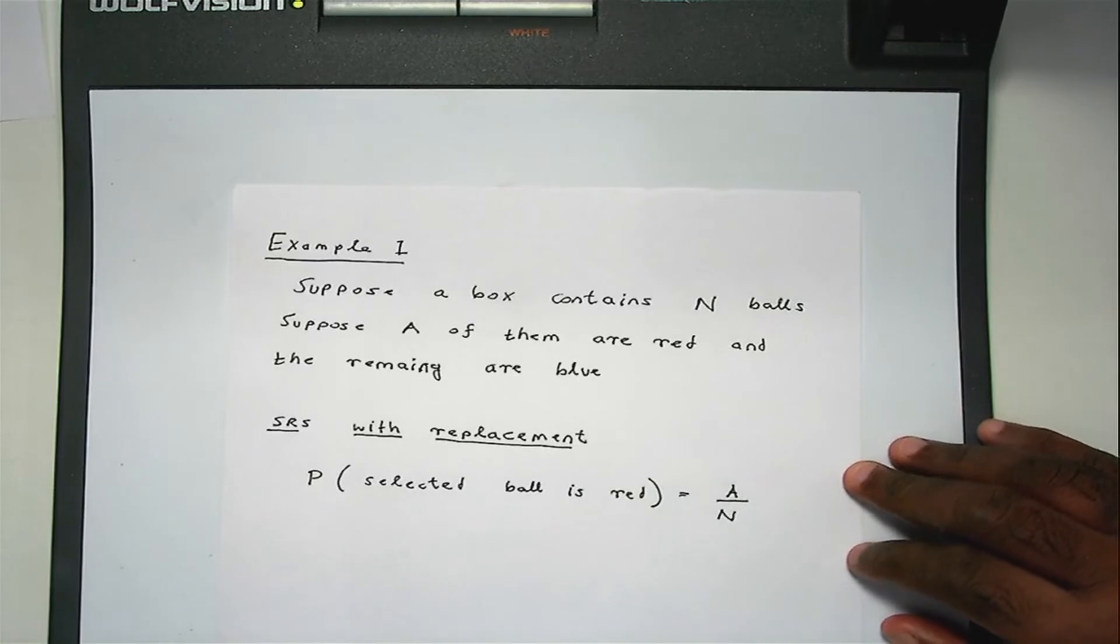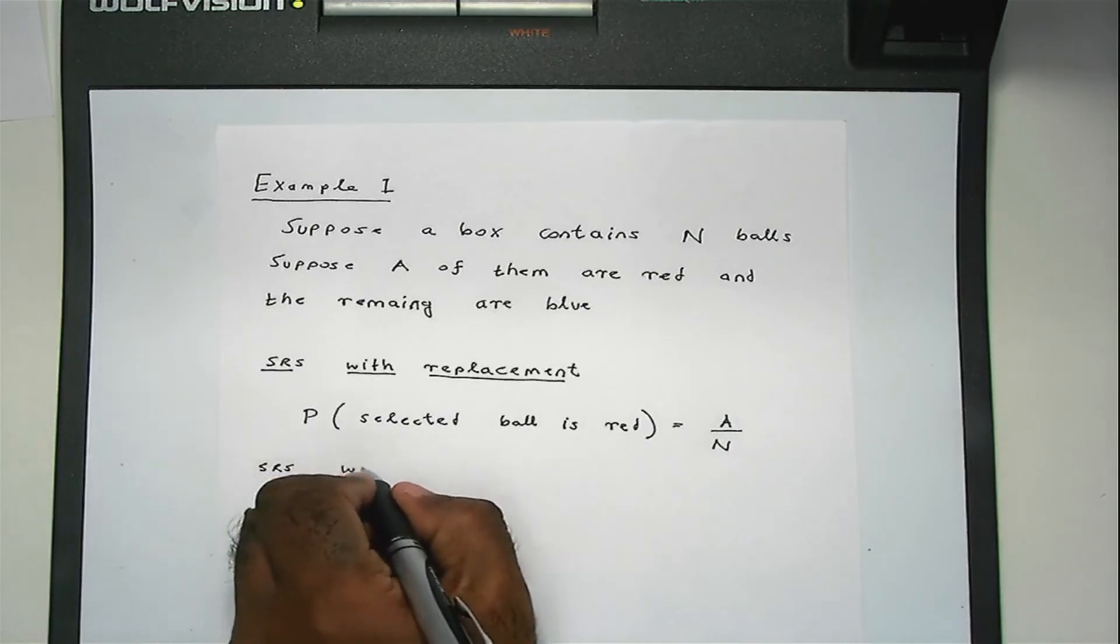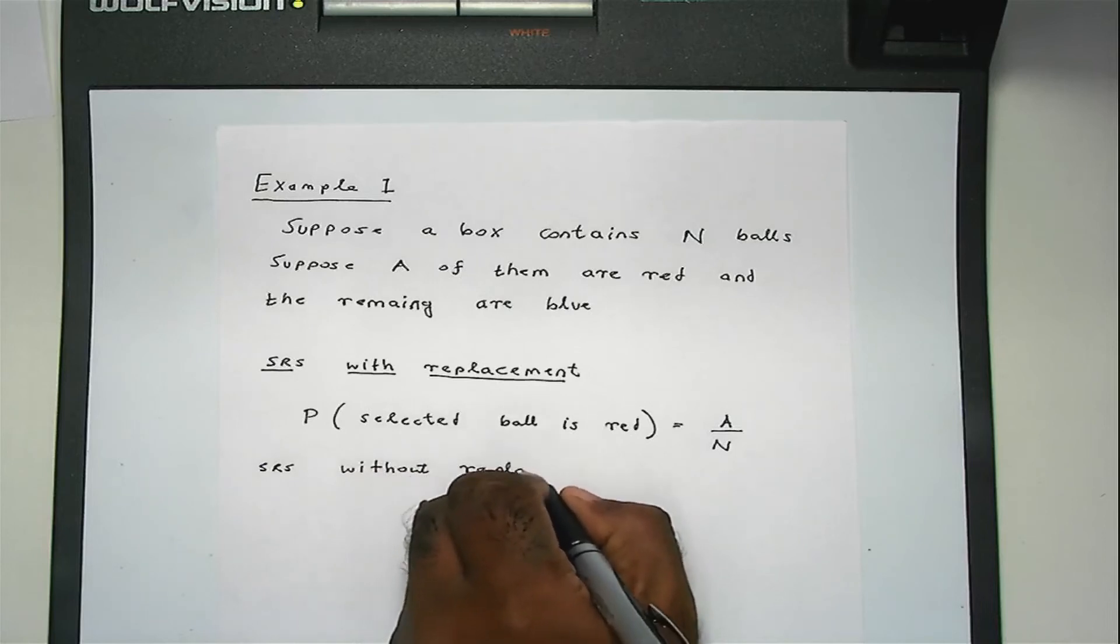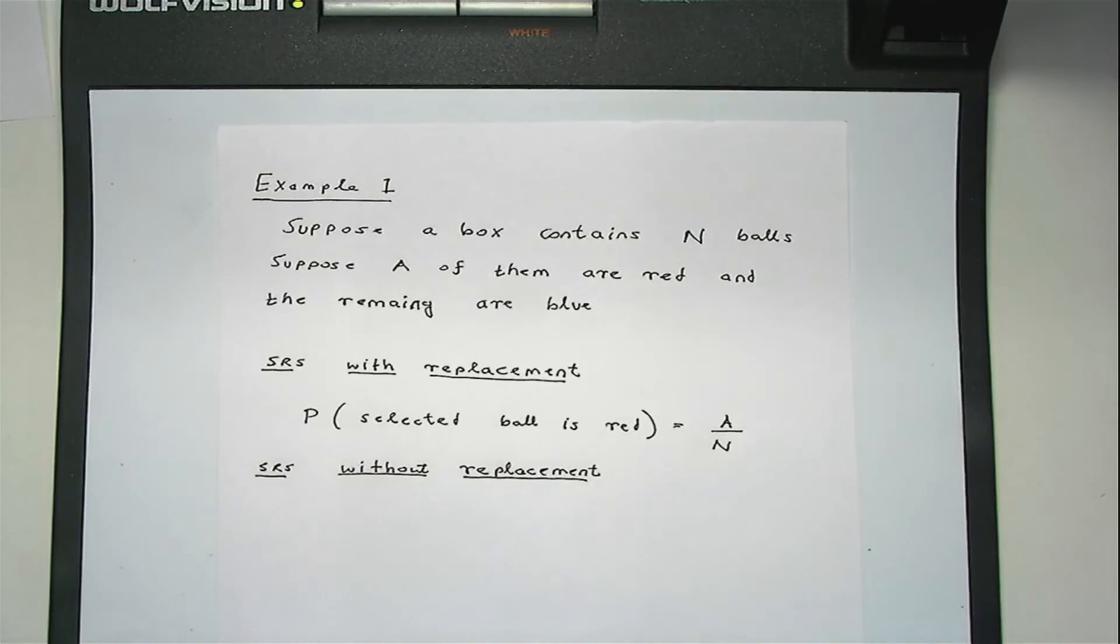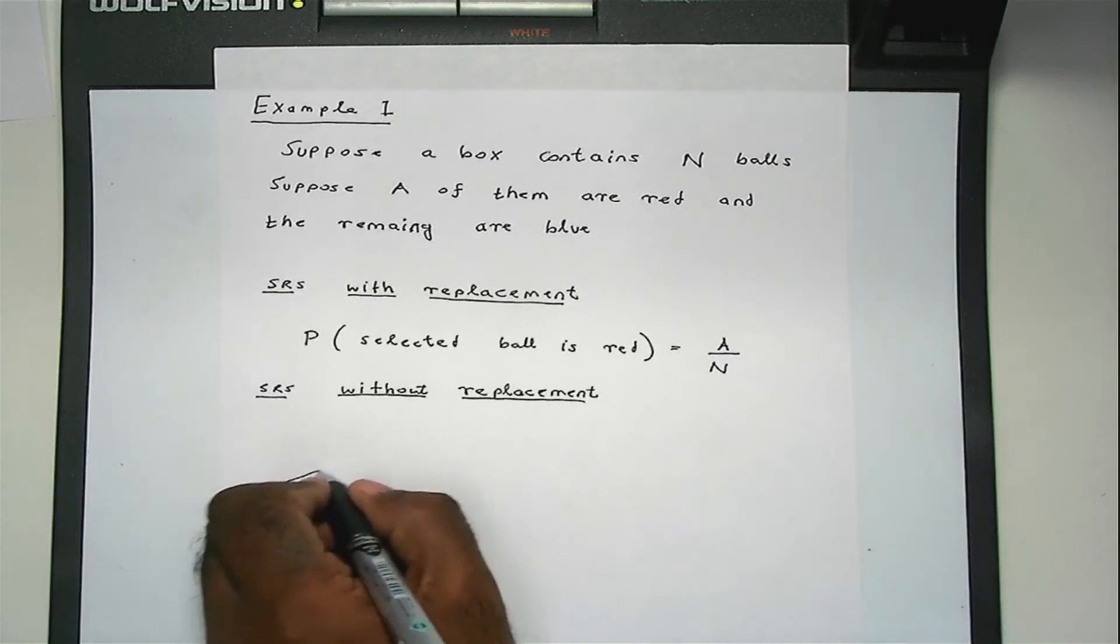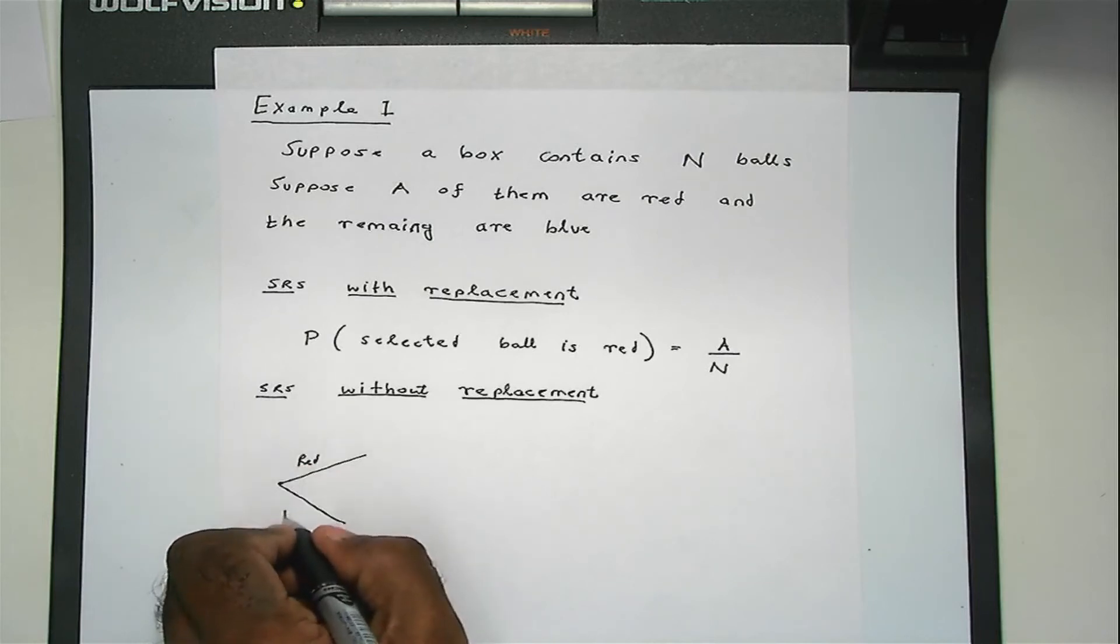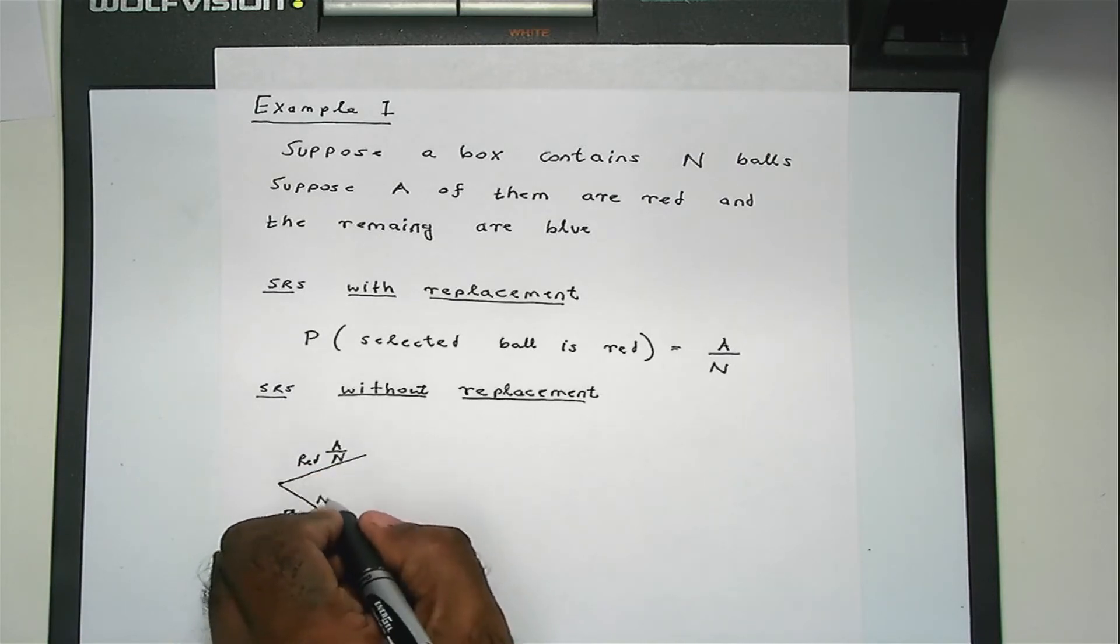And on the other hand, you should do SRS without replacement. Now the probability will differ every time you select a ball. So for example, let's consider suppose you're selecting two times. So the first time you select a ball, it will be either red or blue. And the probability it will be red is capital A divided by N. And the probability that it will be blue is N minus A divided by N.